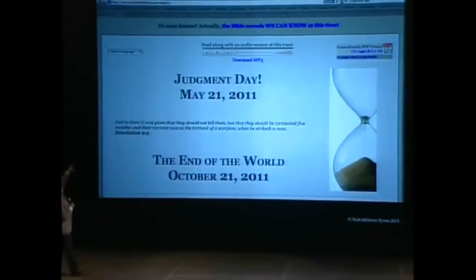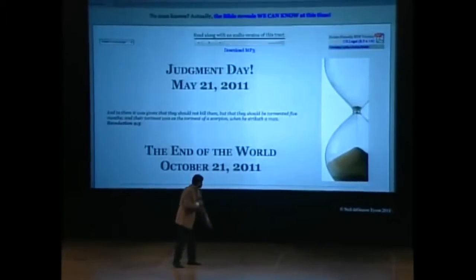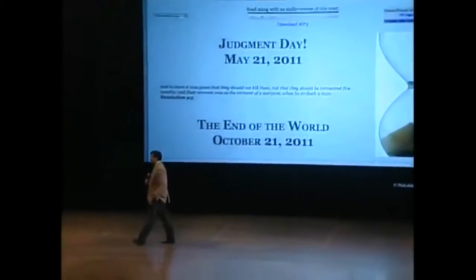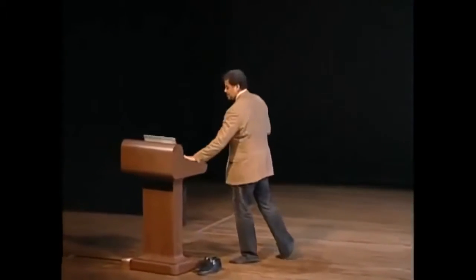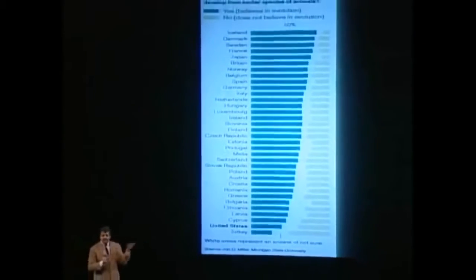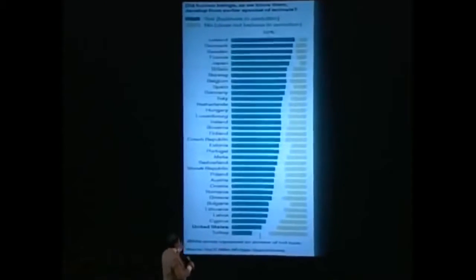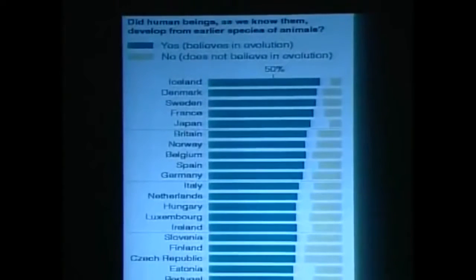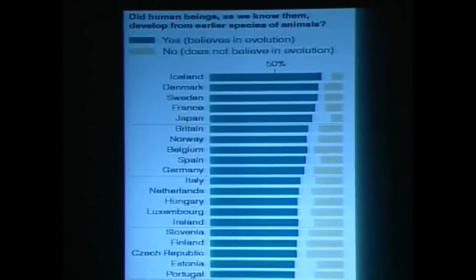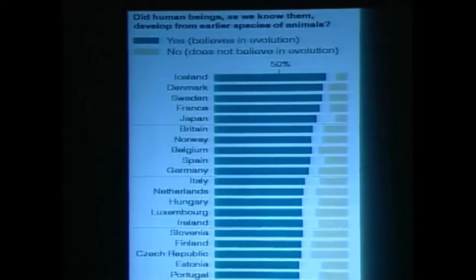There was no greater golden age in the history of the world before or after. When you look at the sum of advances that came out of that period in Baghdad, algebra was invented in that period. Algebra is itself an Arabic word. Algorithm is an Arabic word. Our numerals are Arabic numerals.